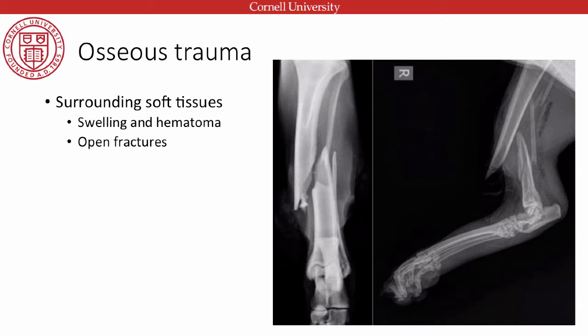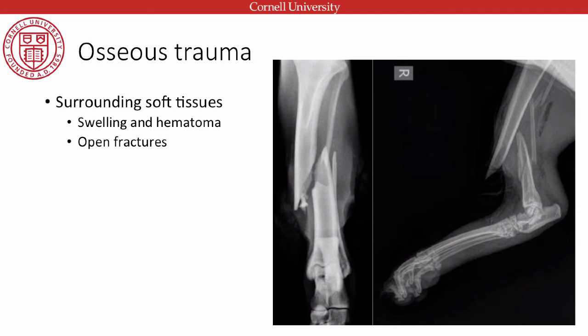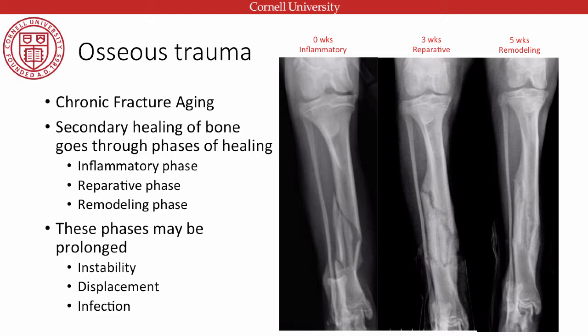In abuse cases it's important to look not just for acute fractures but also for chronic fractures from previous abuse. We need to be able to age fractures from their imaging features. If an owner says a fracture is acute but radiographically it appears chronic, we need to question the history — has there been chronic abuse with the owner attributing it to a recent event like falling down stairs?